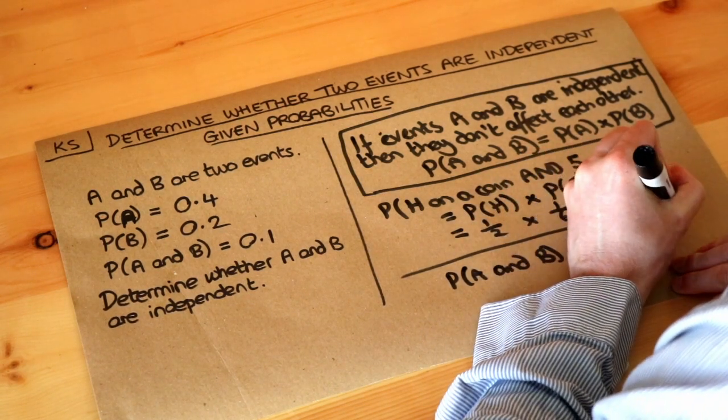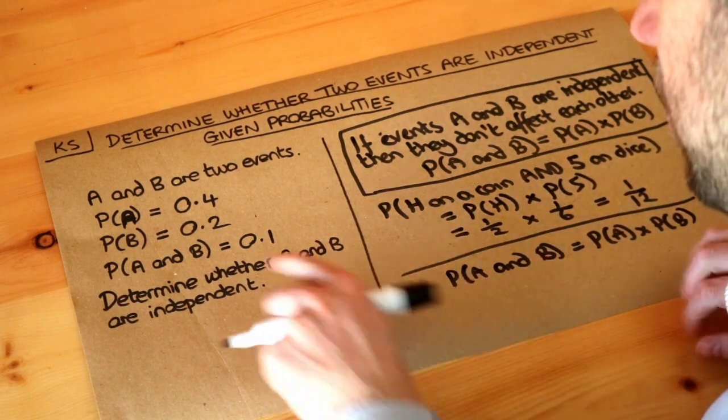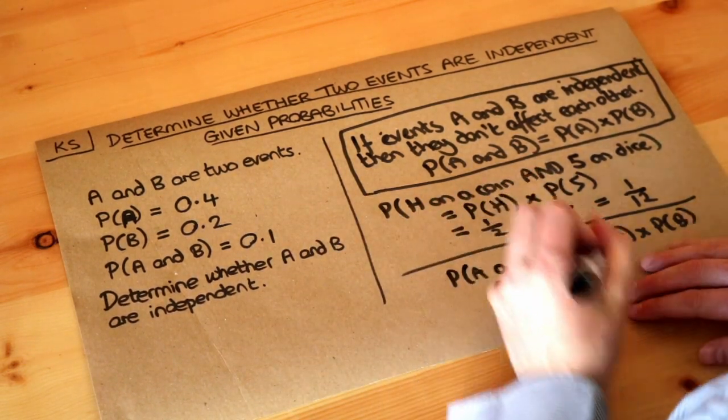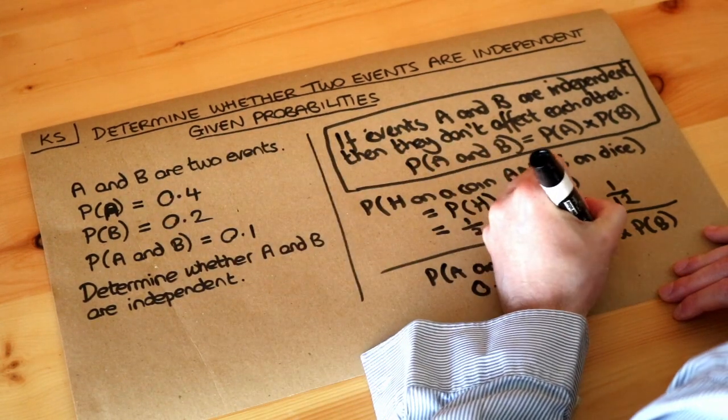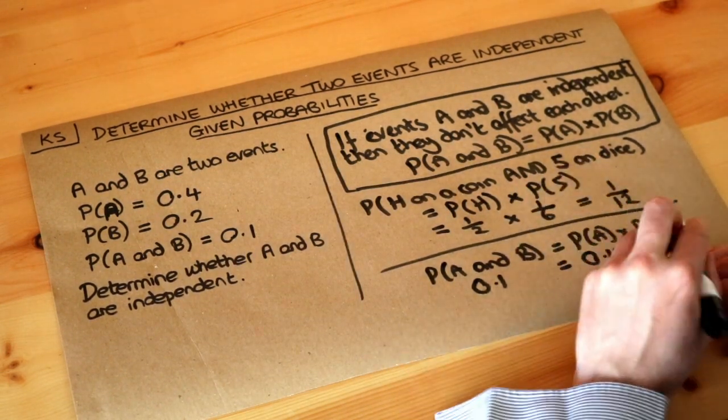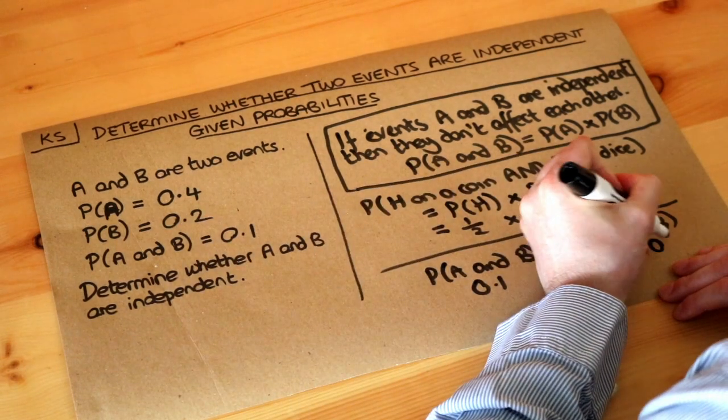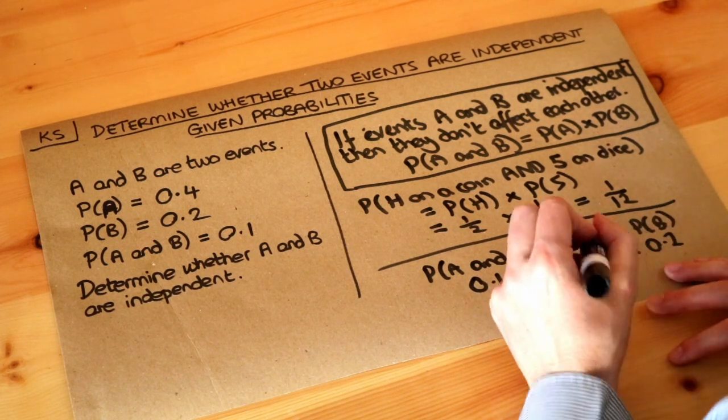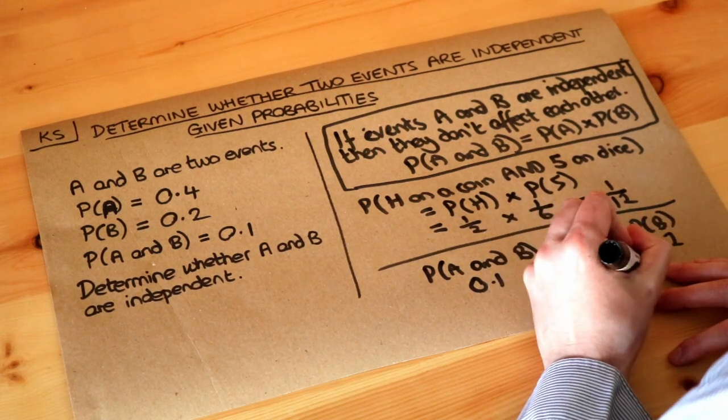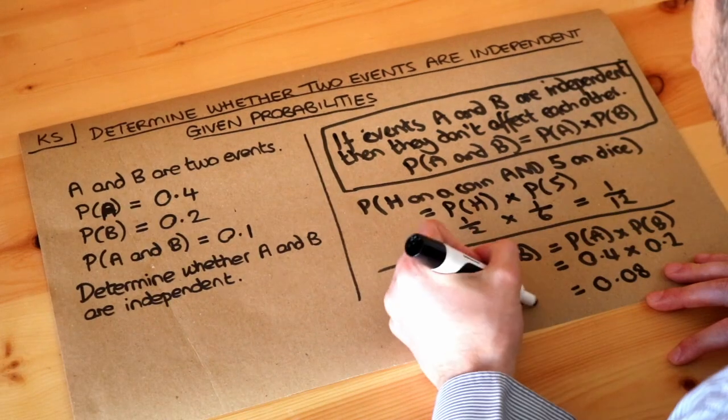The probability of A and B is 0.1. The probability of A is 0.4 and the probability of B is 0.2. Now if you simplify each side, 0.4 times 0.2 is 0.08, and we've got 0.1 here.